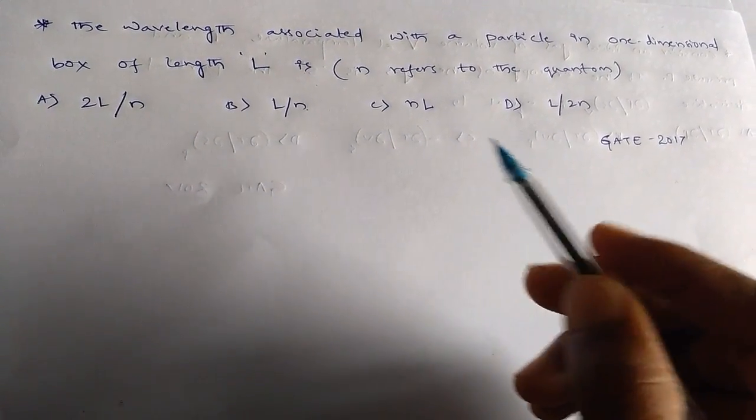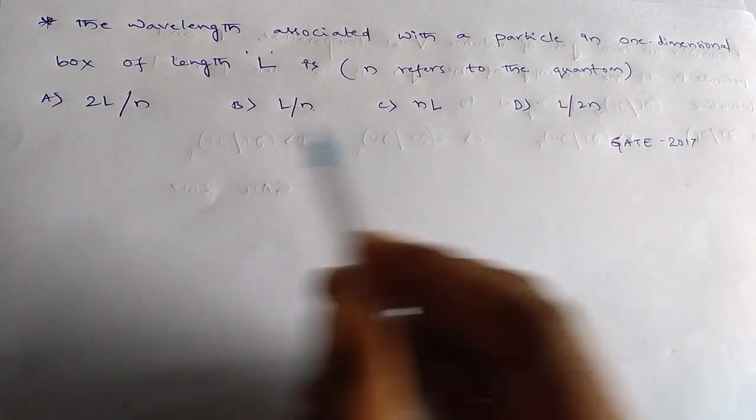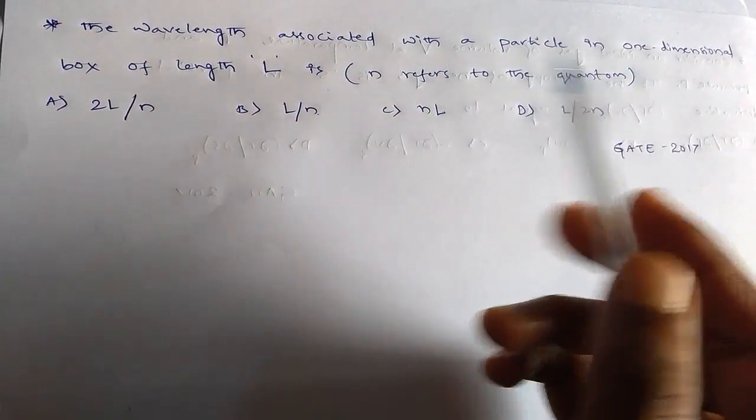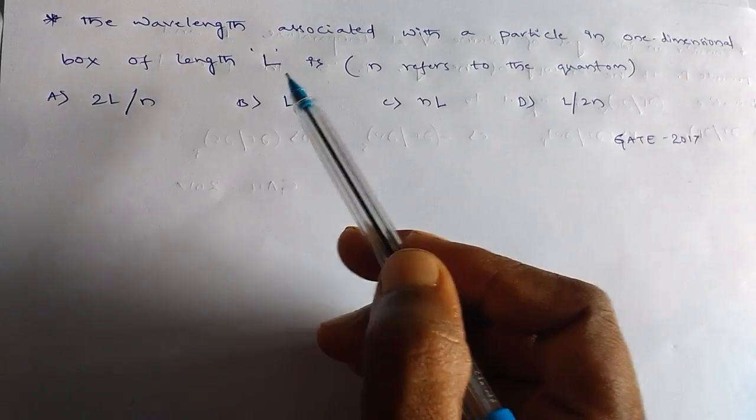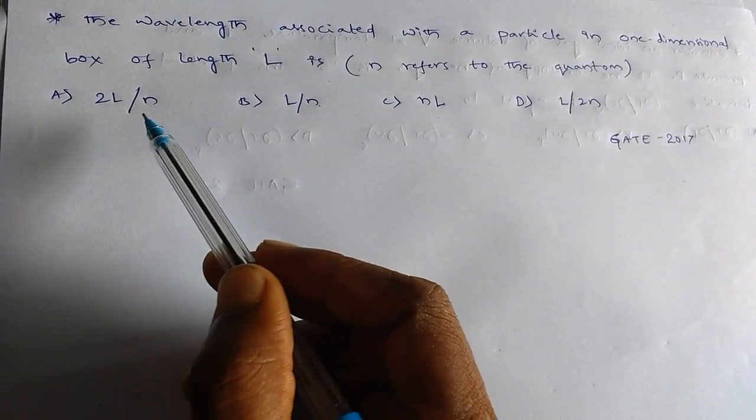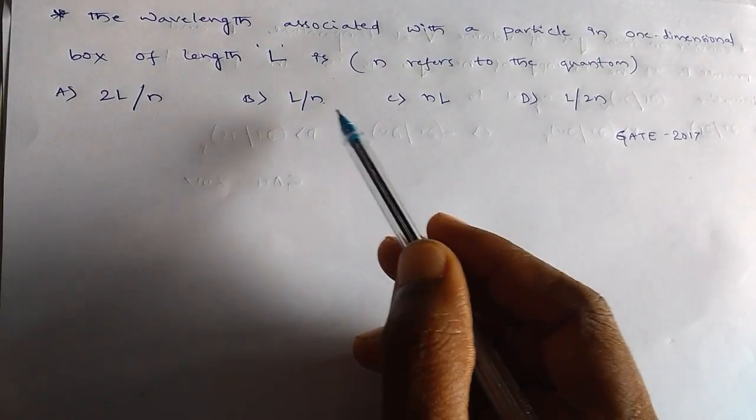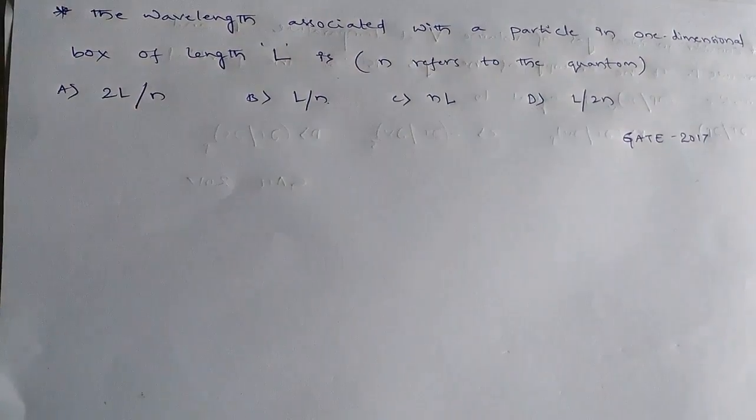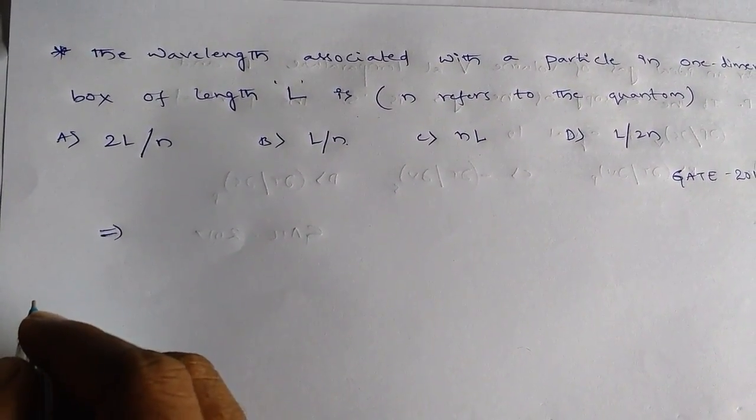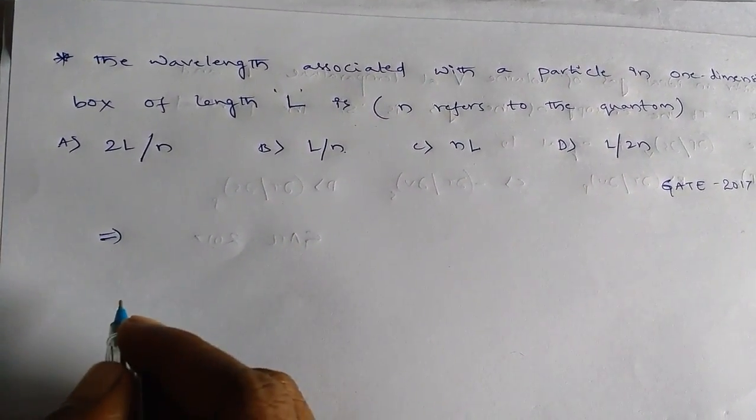Hi, this is your chem master. This question appeared in GATE 2017. The question is: the wavelength associated with a particle in one dimensional box of length L is, where n refers to the quantum number. So here option A is 2L by n, B is L by n, C is nL, D is L by 2n.